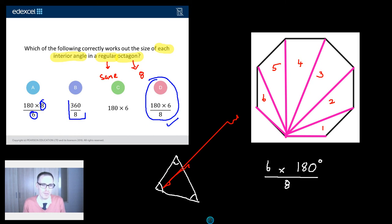What about this? This is an interesting one. 360 divided by eight. It's the wrong answer to this question, but it's the right answer to another question. Do you know what it is? Well, that is actually the size of each exterior angle.